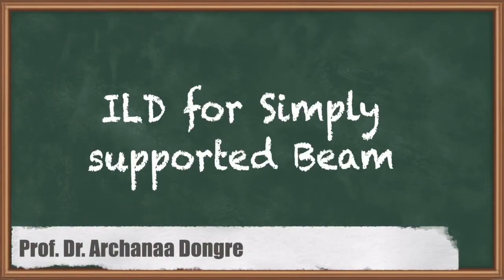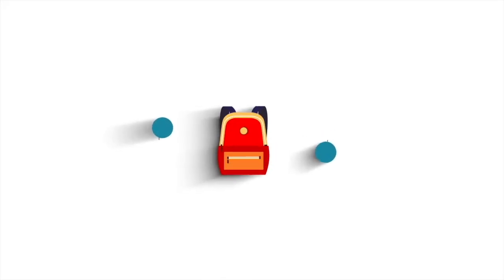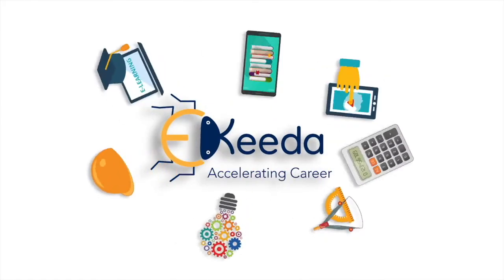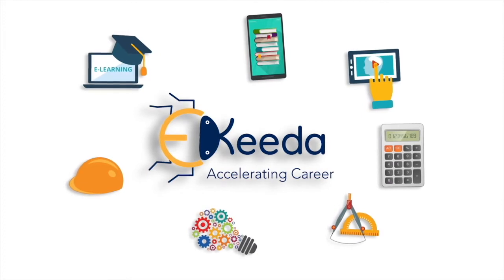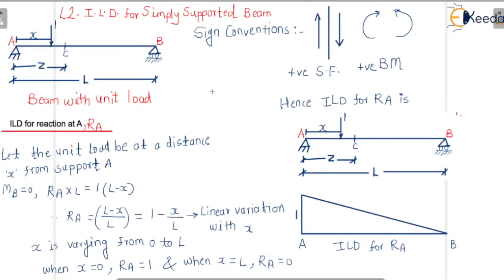Hello students, we are going to start with a problem on a simply supported beam. We'll draw the influence line diagram for a simply supported beam. Here is a simply supported beam — one support is a hinge and one is a roller support.